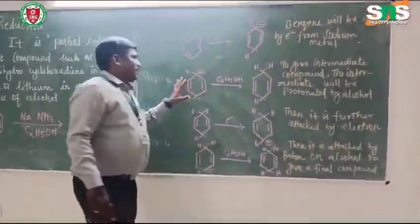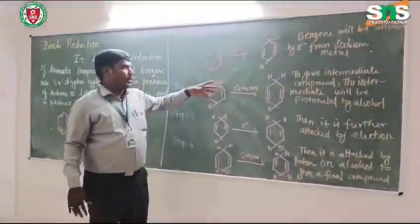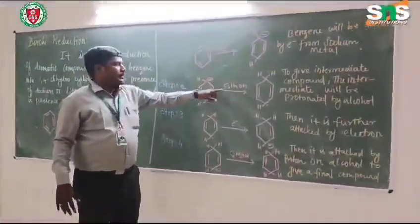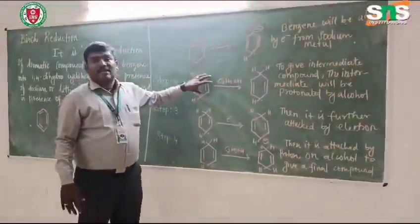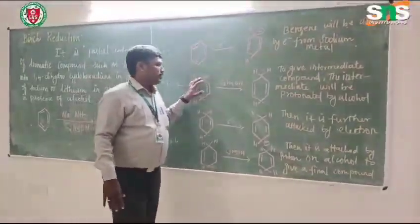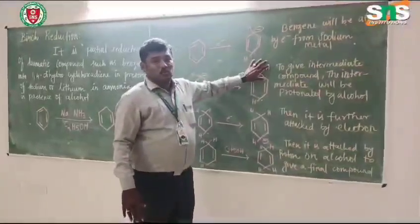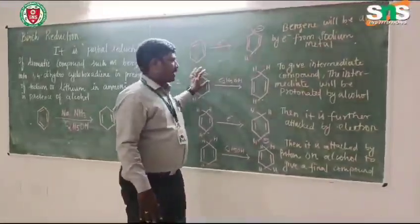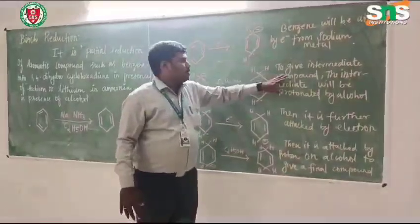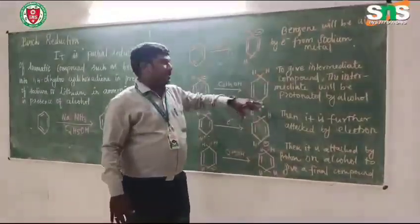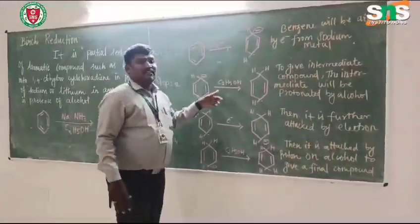This intermediate is then protonated. The alcohol present in the solution provides the proton, so the CH in the ring is converted into CH2, giving the second intermediate by means of protonation.